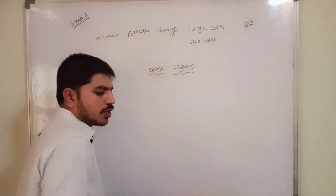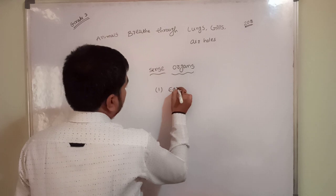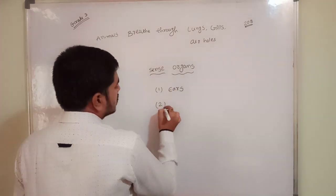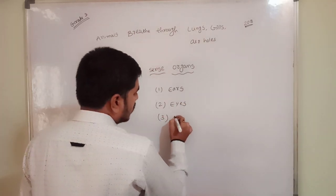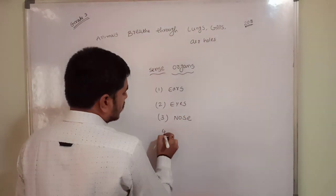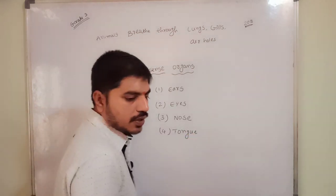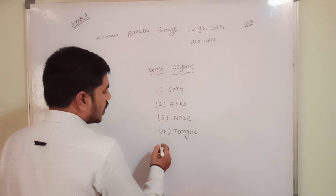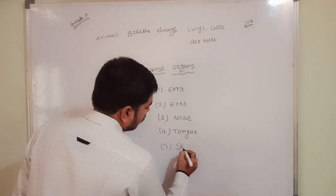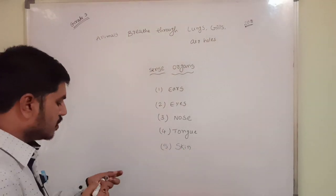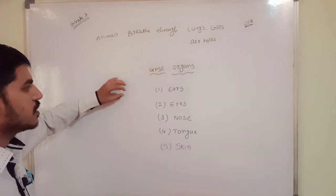The five sense organs are: ears, eyes, nose, tongue, and skin. Ears for listening, eyes for looking, nose for smell, tongue for taste, and skin for feeling — such as feeling cool or hot.